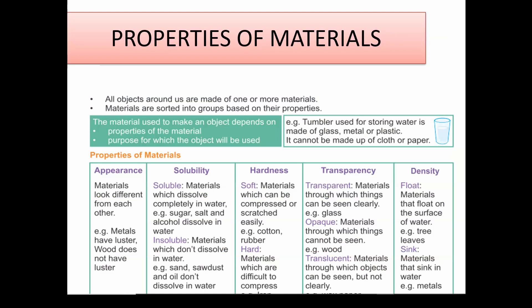Now, coming to properties of materials — different materials are required to make different objects. Why are these materials used? Because there are special properties of each material which are required to prepare an object. The material used to make an object depends on the properties of the material and also the purpose for which the object will be used.